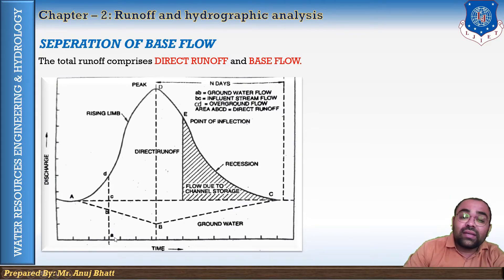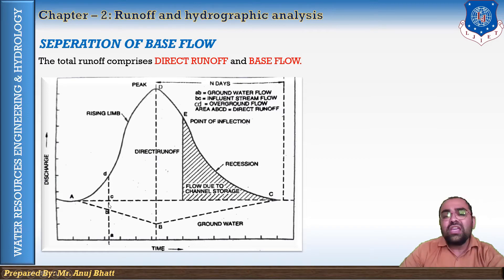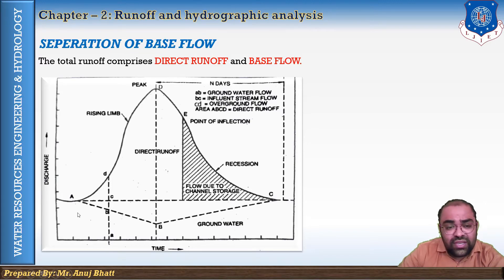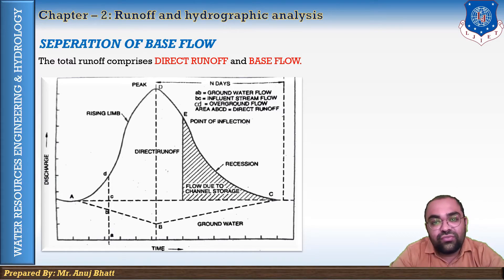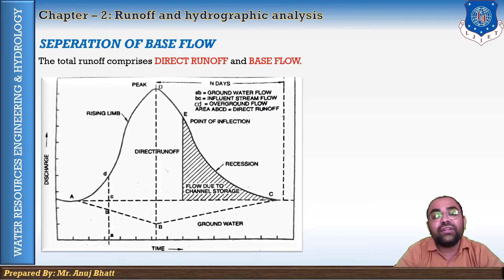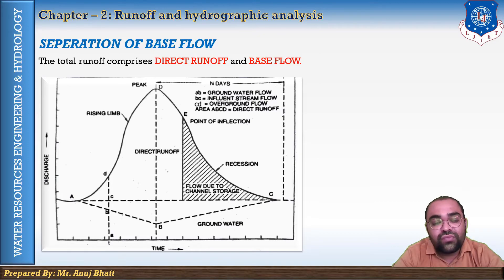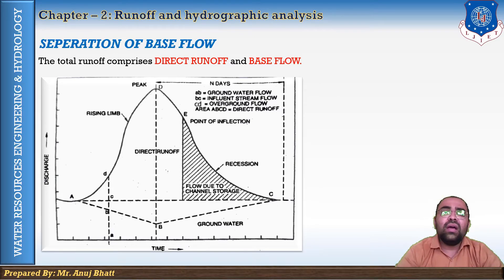Base flow is the initial flow of the river before the rainfall comes. It is the sustained or dry weather flow of the river resulting from the flow of perennial or almost permanent groundwater contribution that reaches the river. This base flow is more or less assumed to be constant. For the derivation of the unit hydrograph, the base flow has to be separated from the total runoff volume.